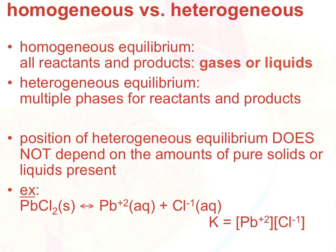In homogeneous equilibrium, all the reactants and products are going to be in the same phase. They'll all be gases, or they'll all be dissolved in a liquid or dissolved in a solution in the aqueous state. In heterogeneous equilibrium, we're dealing with multiple phases for your reactants and products.